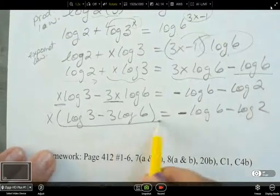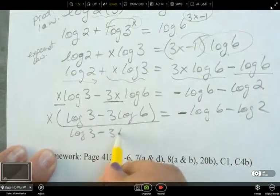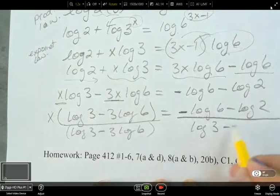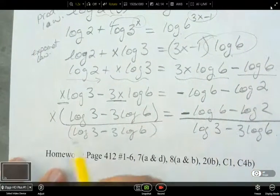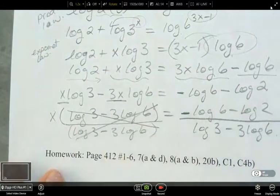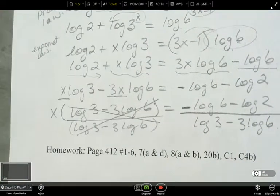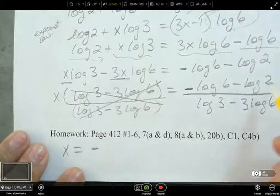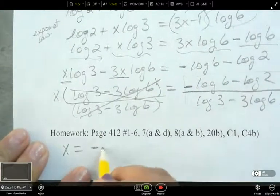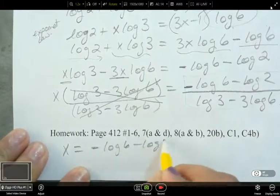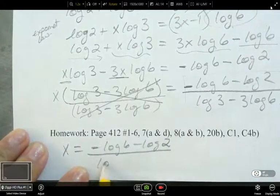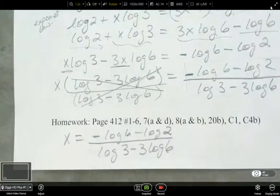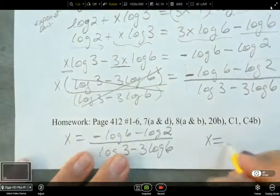Divide both sides by what's in the bracket here. So this is reduced to 1. And then what's x? So x is negative log 6 minus log 2 over log 3 minus 3 log 6. And if I punch this into my calculator, what do I end up getting as x equals?